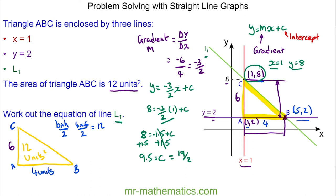So finally the equation of my straight line graph L1: y equals the gradient negative 3x over 2, plus the intercept which is 19 over 2. Thank you for watching and I hope you found that useful. Thanks again and take care.